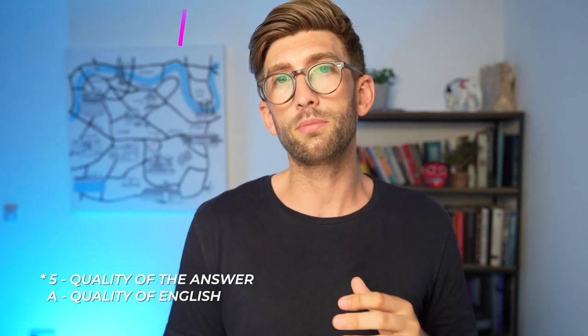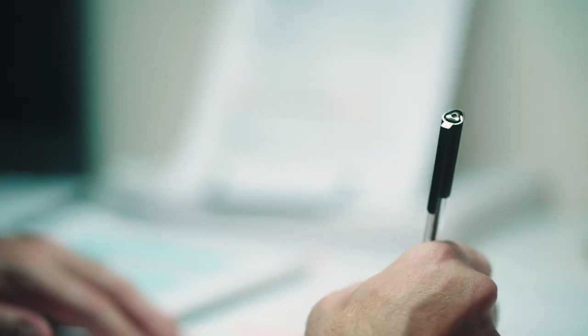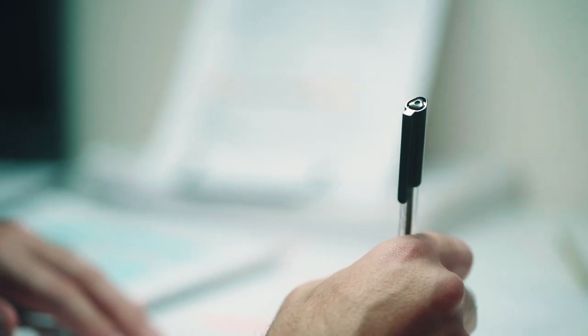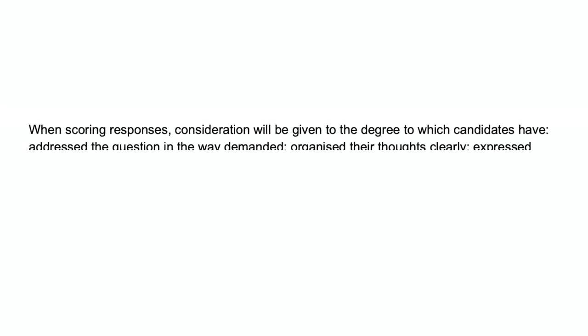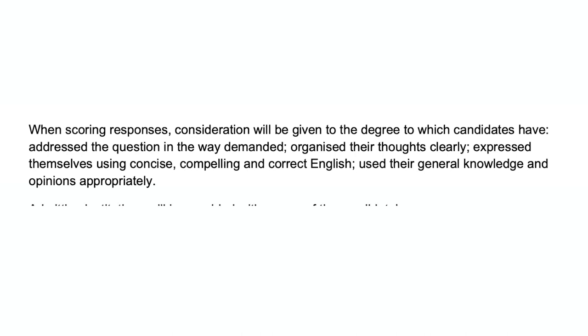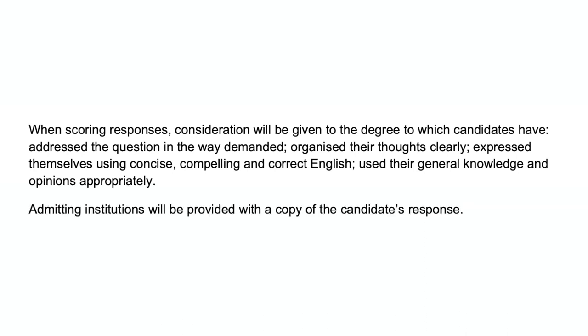Section three has a maximum score of five for quality of answer, and quality of English is graded A to E with A being highest. For Oxbridge-type universities, aim for 3A, 3B or above. When assessing the quality of content, markers ask: has the candidate addressed the question in the way demanded? Have they organised their thoughts clearly? Have they used their general knowledge and opinions appropriately?